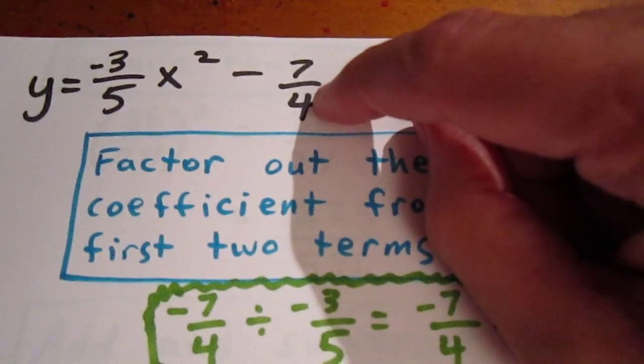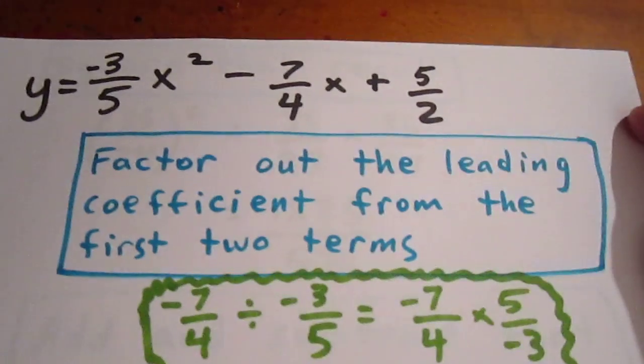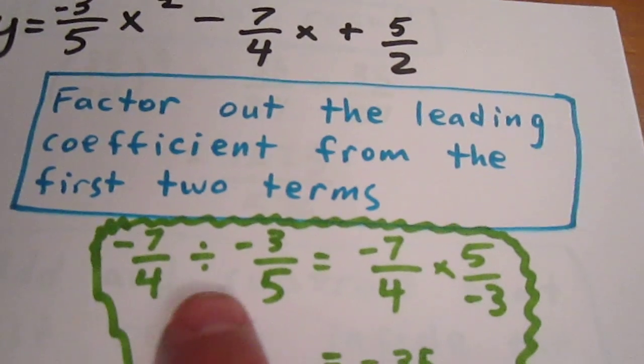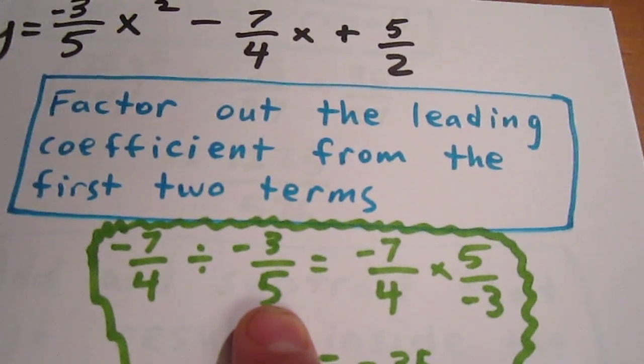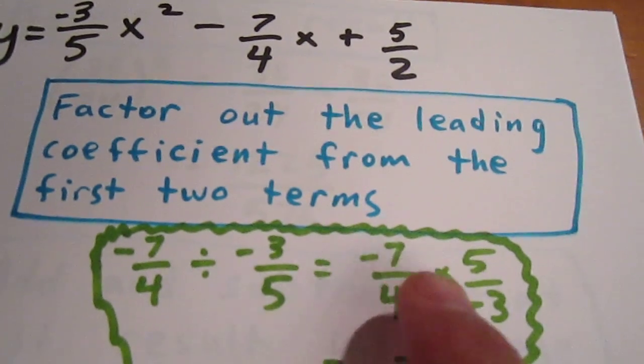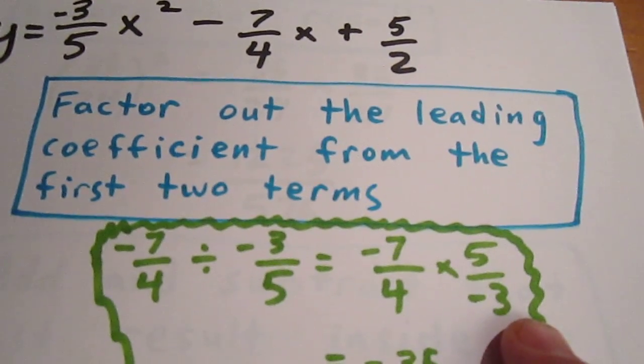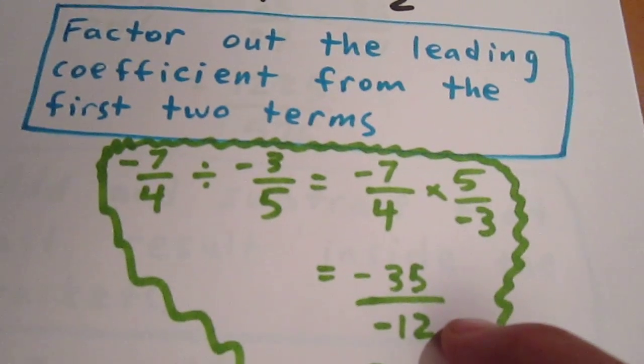If you know your fractions, negative 7 quarters divided by negative 3 fifths is a pretty simple process. You just have to make sure you follow the steps. That becomes negative 7 quarters times 5 over negative 3, which becomes negative 35 over negative 12.